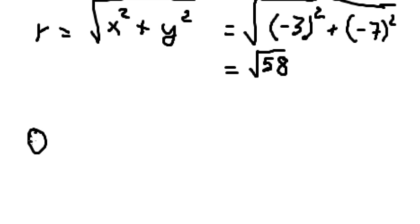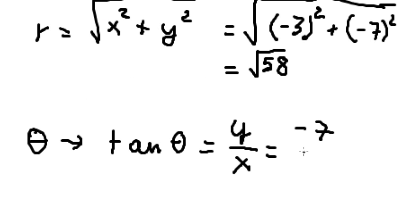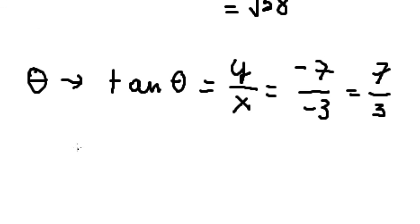For theta, we need to find tan theta, and that should be y over x. y is negative seven, x is negative three. We simplify and get seven over three, so theta equals arctan of seven over three.